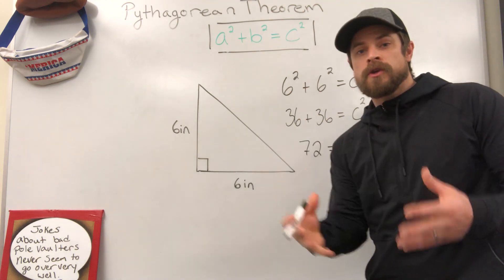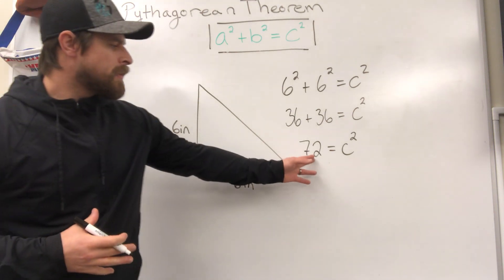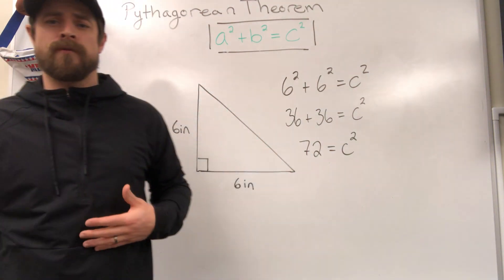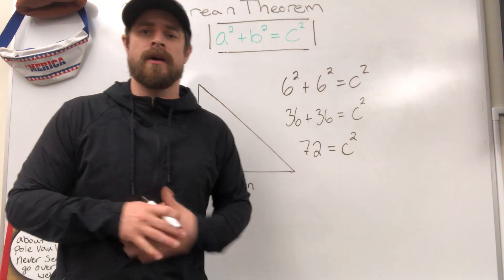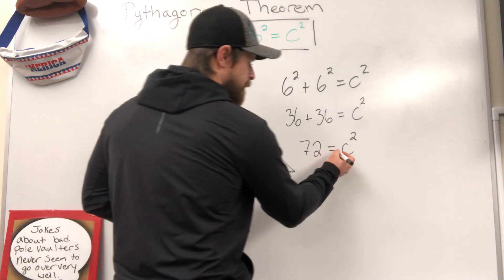Now, when you first start working with these types of problems, a lot of the time, the first types of problems you're going to get, the answer at the end is going to be what's called a perfect square, such as the square root of 49, or the square root of 100, or the square root of 64. Those are all perfect squares,